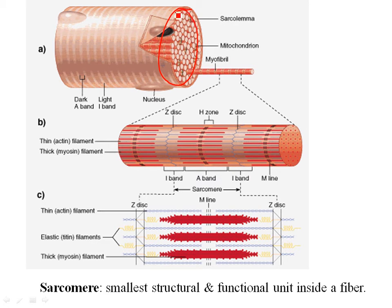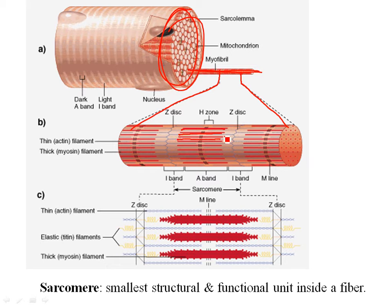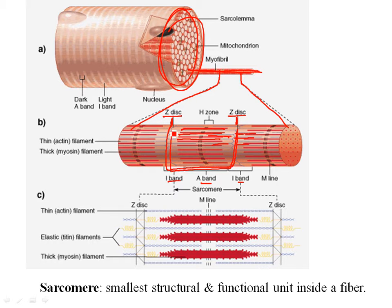If you take one myofibril — one rod of protein filaments — and look at it microscopically, you see regular repeating bands. You've got thick bands called myosin, and then smaller bands of actin interspersed between them in a regular, repeating pattern. What you need to know is that from Z-disc to Z-disc, that piece makes up the functional unit of contraction for the skeletal muscle cell, and that is known as the sarcomere. One sarcomere runs from Z-disc to Z-disc.